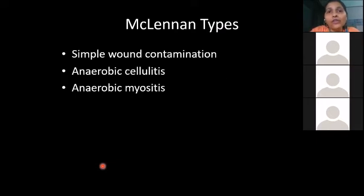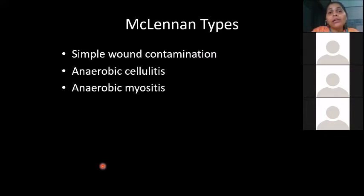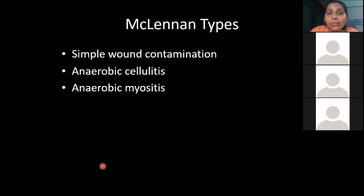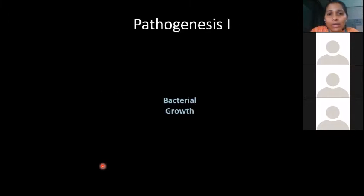Organisms like E. coli and Proteus are also associated with gas gangrene. Regarding clinical classification, MacLinen classified wounds into three types: simple wound contamination due to anaerobic spores; cellulitis, where only the fascia or skin and subcutaneous area is involved; and anaerobic myositis, when the infection invades the fascia and enters the muscle mass.